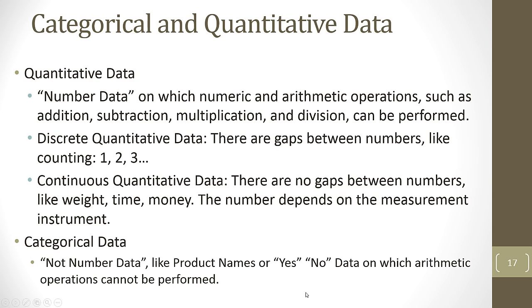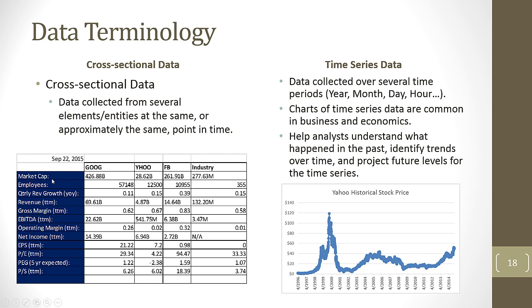Last slide, slide number 18, data terminology, cross-sectional time series. Quite easy. Cross-sectional means we have several different elements that we're collecting various data points on at the same or near the same point in time. So here we have various stocks in the industry on this particular day. Time series needs no explanation. It means we're collecting data points over time. Here is Yahoo historical price over a long time period. That's it for our introduction to data and data sets and data terminology. Our next video, number 13, we will briefly look at sorting, filtering, and pivot tables for raw data. We'll see you next video.